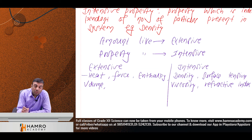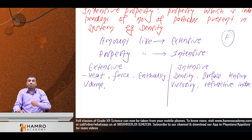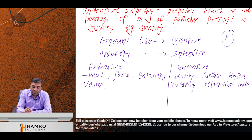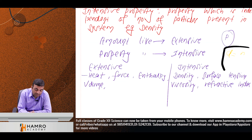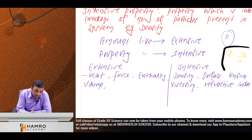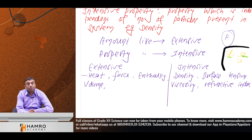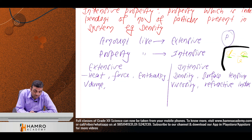Now let's clarify pressure. Density equals mass divided by volume. Mass is extensive, volume is extensive, but density is intensive. So, extensive property per unit gives an intensive property.